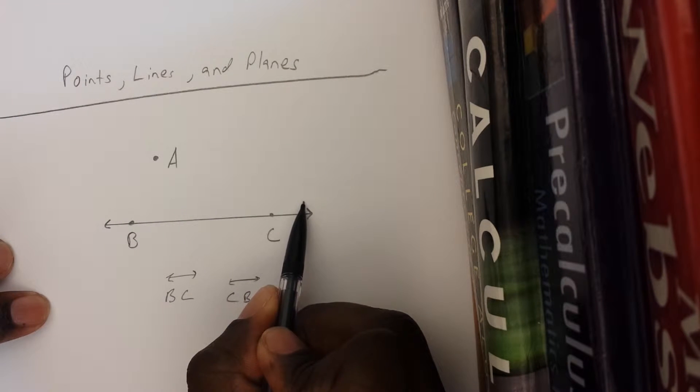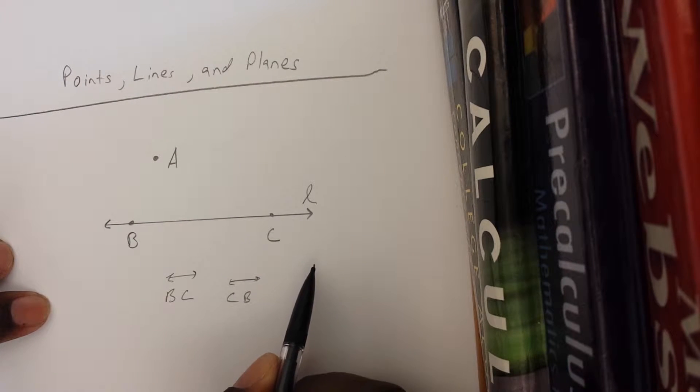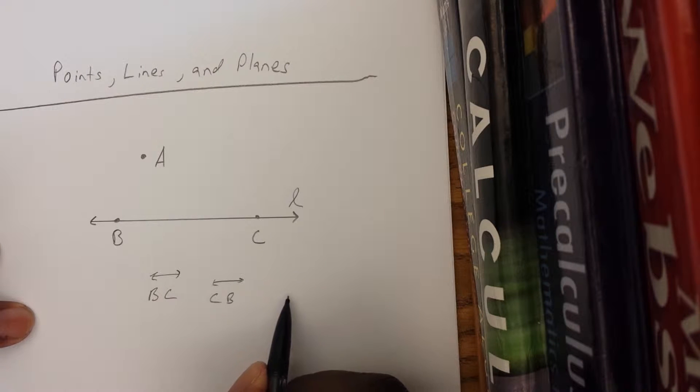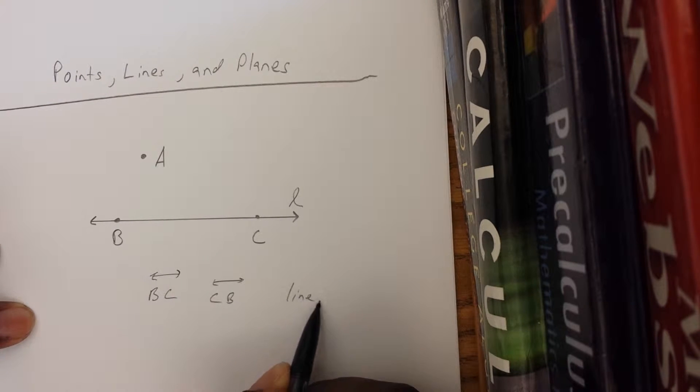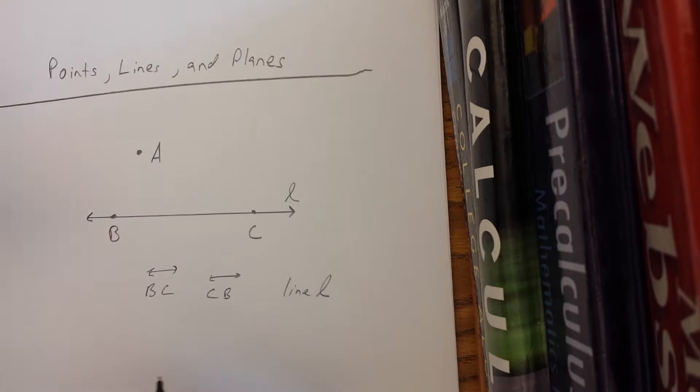If I gave it a lowercase cursive letter, like an L, I could also call it line L. And that little L represents that as a line. So that's how you represent a line. That's how you represent a point.